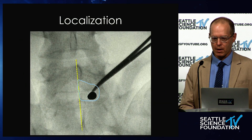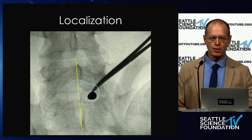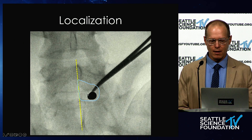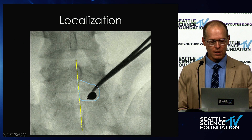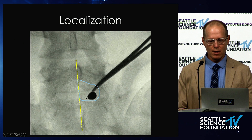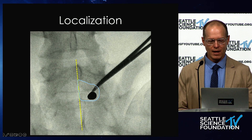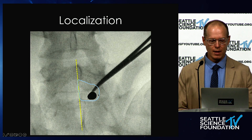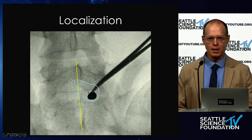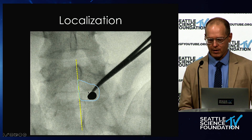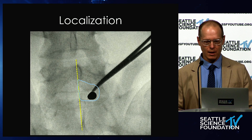Localization is pretty straightforward — we're getting a PA view fluoroscopy. A question often asked is: where are you targeting? You're targeting the interlaminar window. You can see the L5 lamina, the S1 lamina edge, the medial part of the facet joint, and the spinous process. If you bisect that line or go right in the center of this space, that's typically a good starting point. There are variations, but I'm only going to teach you one today.